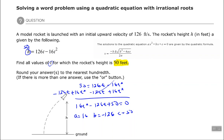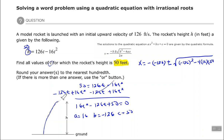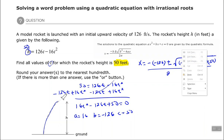Since t represents time, we want it to be positive. This rocket is going up and will hit 50 feet on the way up and also on the way back down. So applying the quadratic formula: t equals negative b — where b is negative 126 — plus or minus the square root of b squared minus 4ac, all over 2a, which is 2 times 16.